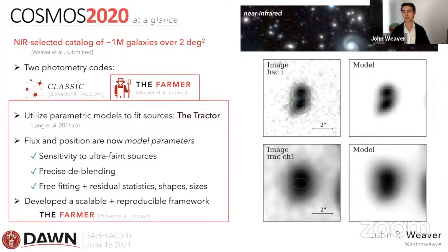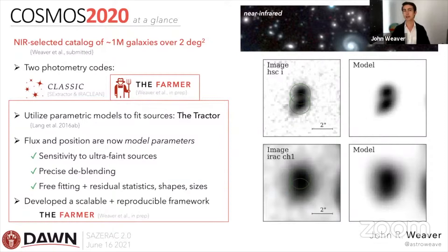This gives us sensitivity to ultra-faint sources and precise deblending. On the right-hand side I show two galaxies very nearby — a pathological case where even two arcsecond apertures cannot separate their fluxes. By developing a model for these galaxies we're able to very robustly separate their fluxes and deblend the sources. We can then apply these same models derived on higher-resolution images to lower-resolution images such as IRAC, which is valuable for all of our high-redshift rest-frame optical science.